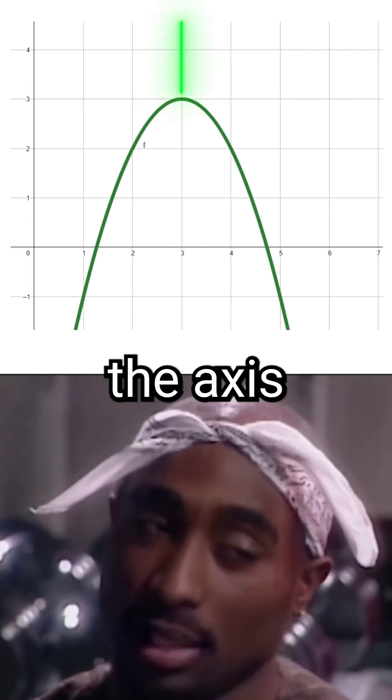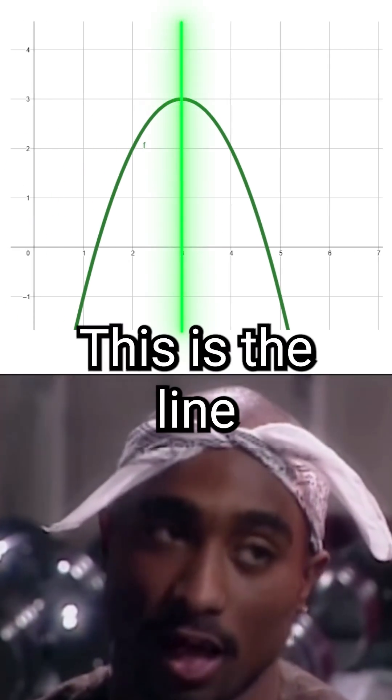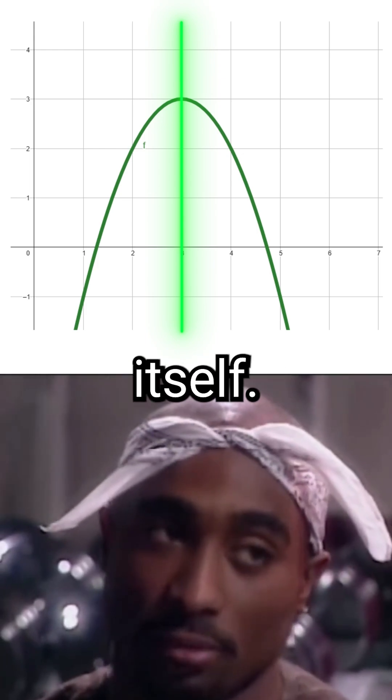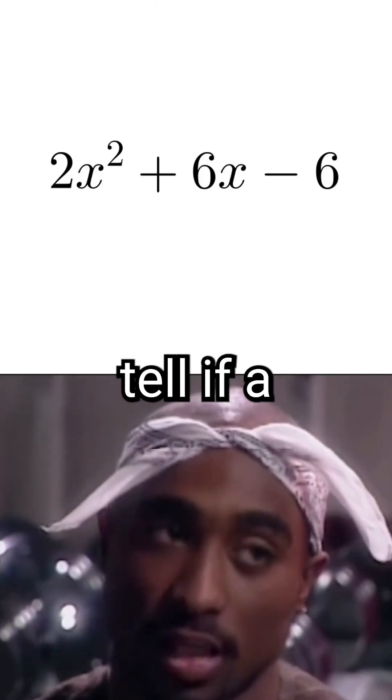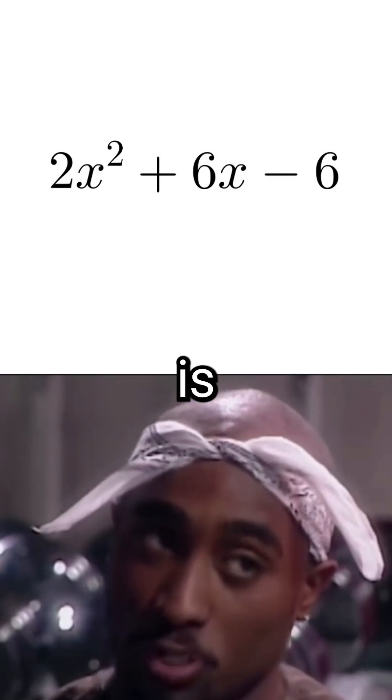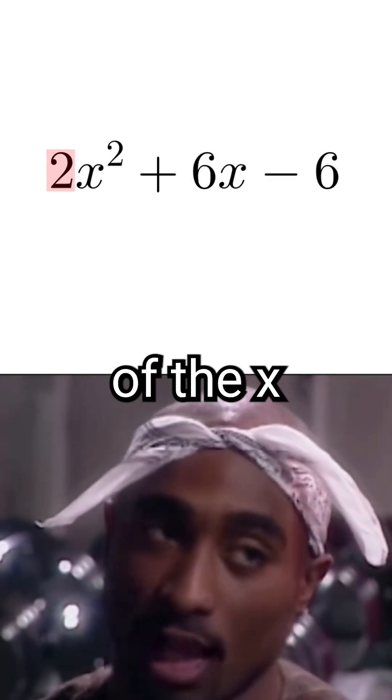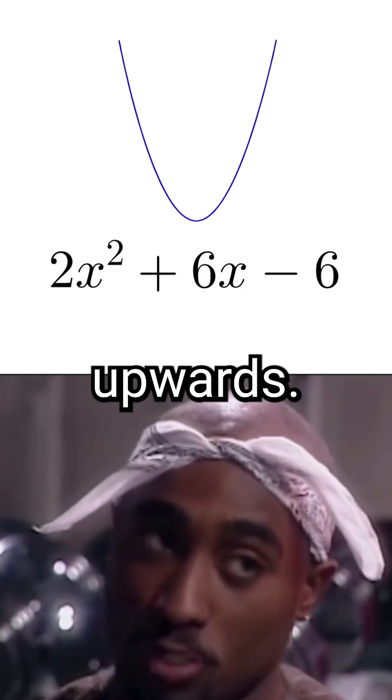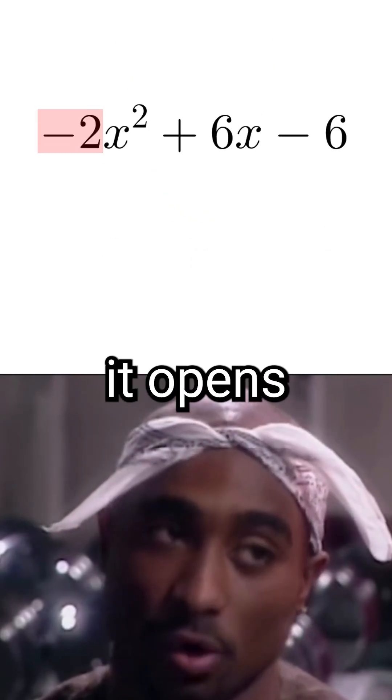Another feature is the axis of symmetry. This is the line where if you flip the parabola around it, it would flip onto itself. Now, the way you can always tell if a parabola opens up or down is just by the number in front of the x squared term. If that number is positive, it opens upwards. If it's negative, it opens downwards.